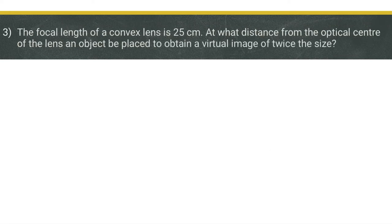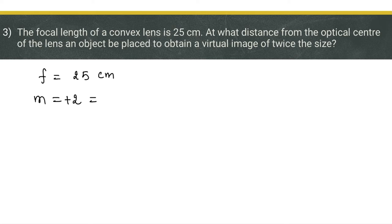Numerical number 3: the focal length of a convex lens is 25 centimeters, so f = +25 centimeters. At what distance from the optical center should an object be placed to obtain a virtual image of twice the size? The magnification is +2 (positive because it is a virtual image). Since m = hi/ho = v/u, we get the relation v = 2u.